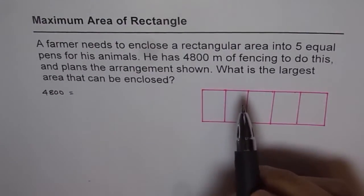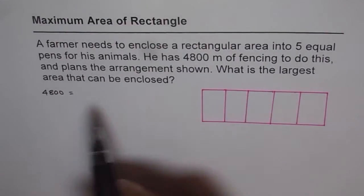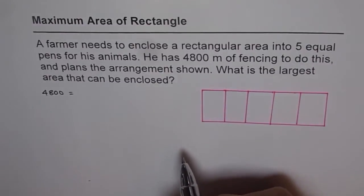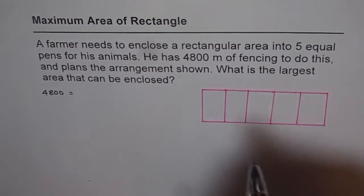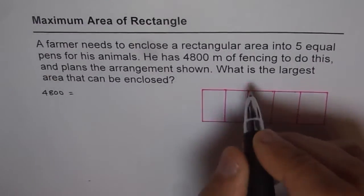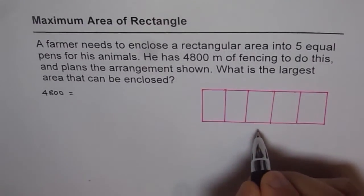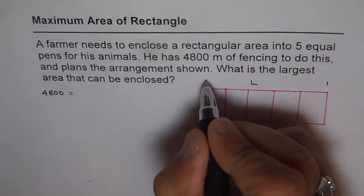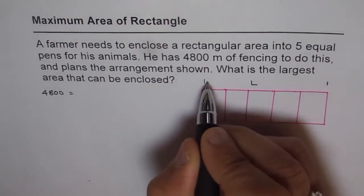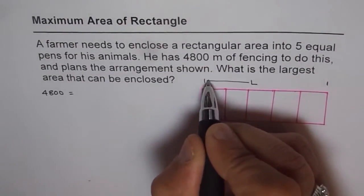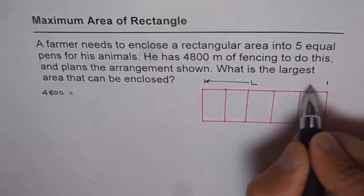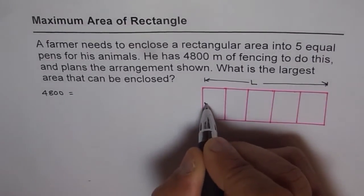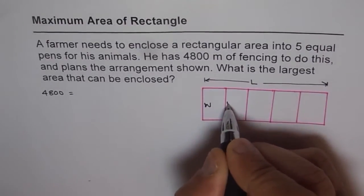Now we need to find the largest area that can be enclosed. So let's say that the length of this whole thing is L — from here to here — and let's say the width is W for each pen.